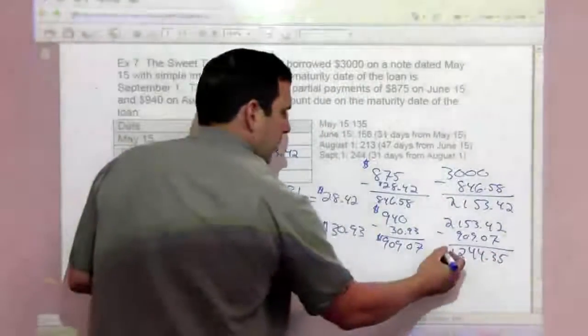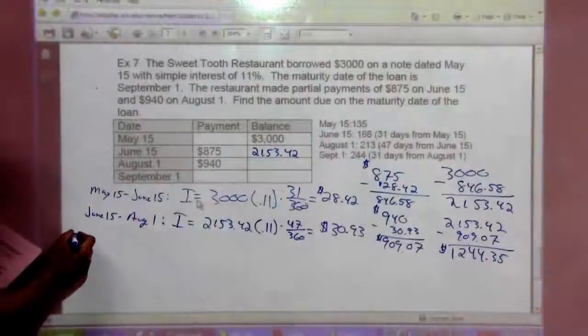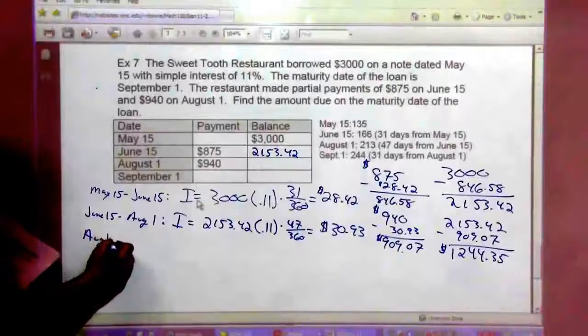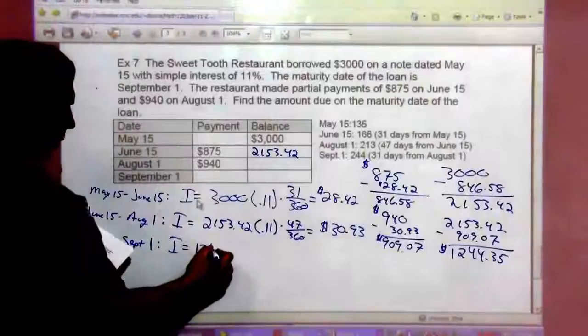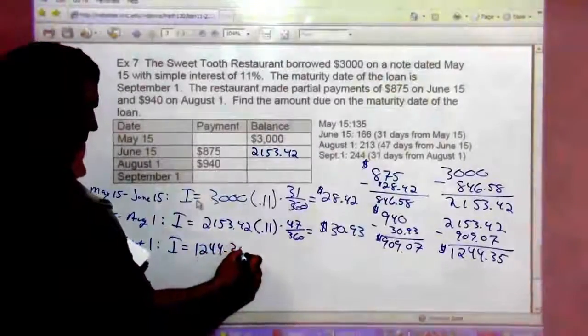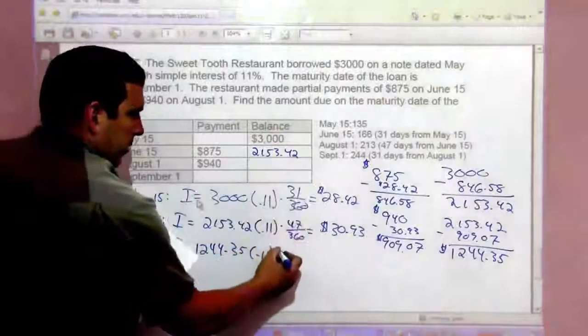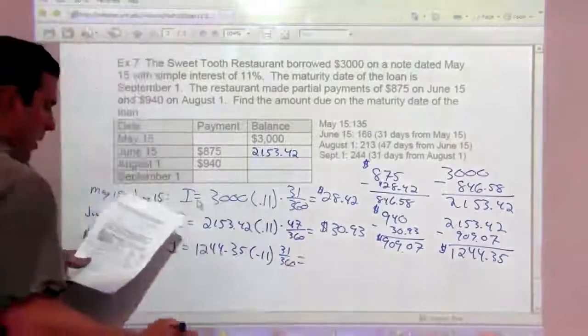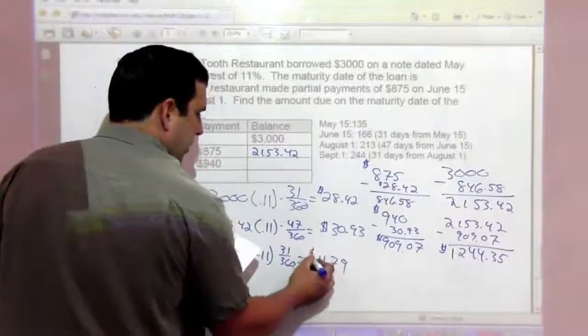And then finally we have from August 1st to September 1st. The interest is going to be $1,244.35 times 0.11, and the number of days there, 31 days out of 360. Interest is now $11.79, nice to see the interest going down.